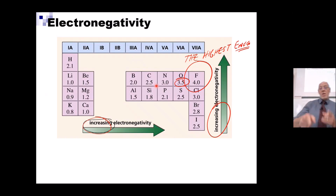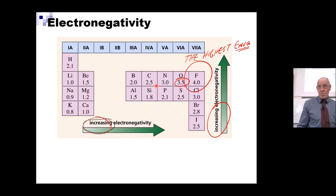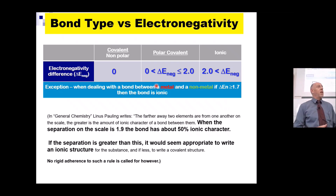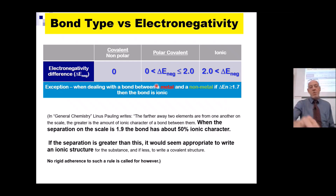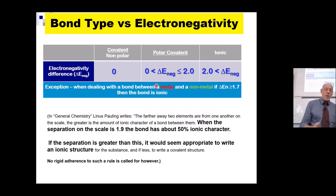This table shows the electronegativities across the periodic table, indicating where electronegativity increases. You must know the trends in electronegativity — you don't need to memorise the numbers as you'll be given the periodic table with them. However, this next table you do need to know, and it has caused more trouble in chemistry than almost anything else, because they often change the boundaries and not all chemists agree on where they should be. We'll work with the values in the notes.